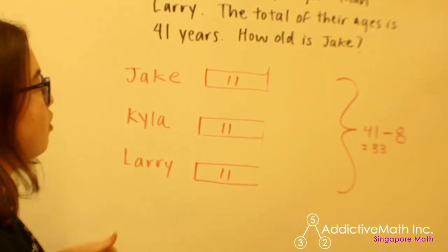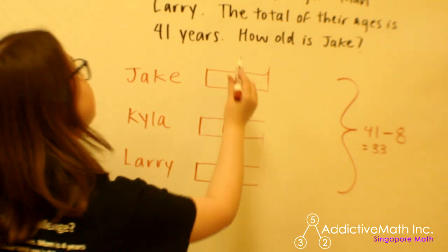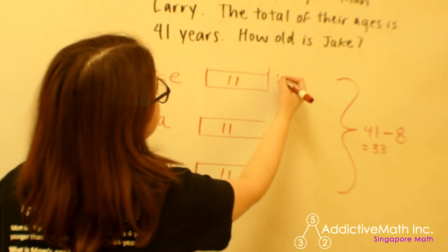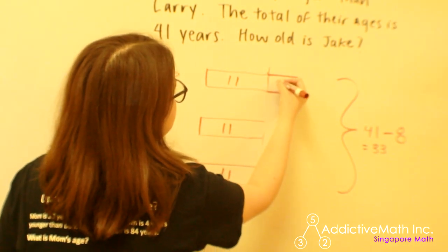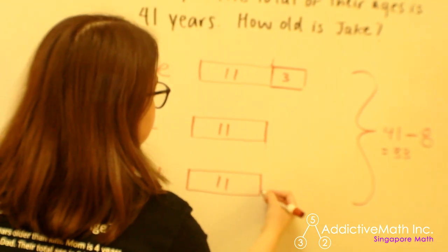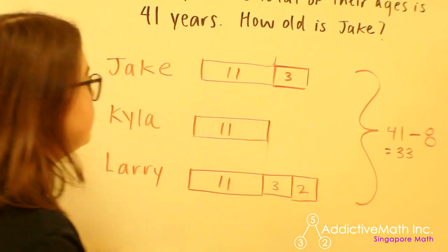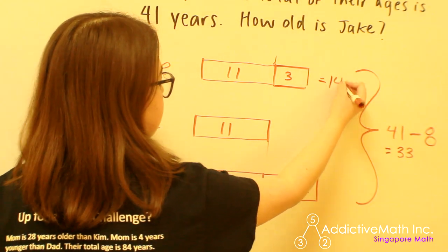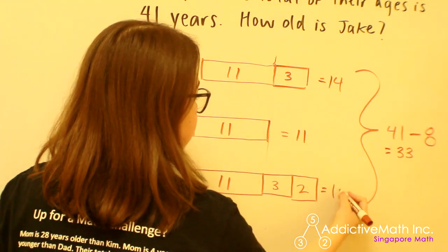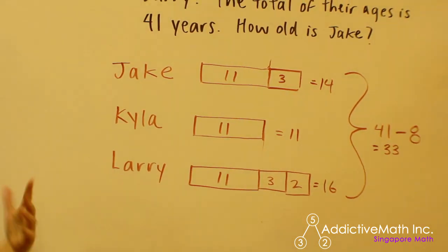Now we can go back and solve for the age of Jake, because none of our quantities are unknown anymore. Going back to our original bar model, where we said Jake is three years older than Kyla, we can now say Jake must be 14, Kyla must be 11, and Larry must be 16. And that's how we arrive at a solution — finding the age of Jake and his friends using a bar model.